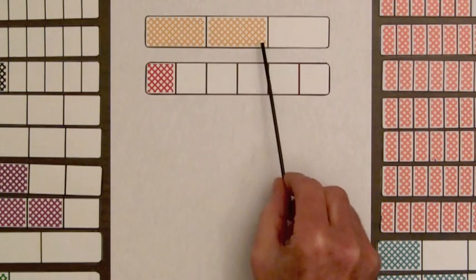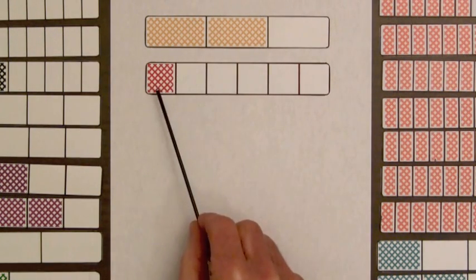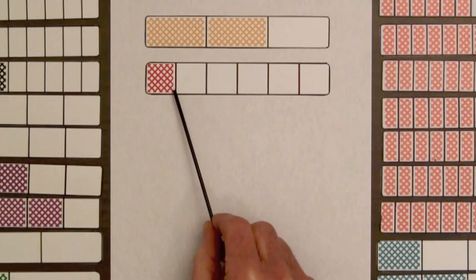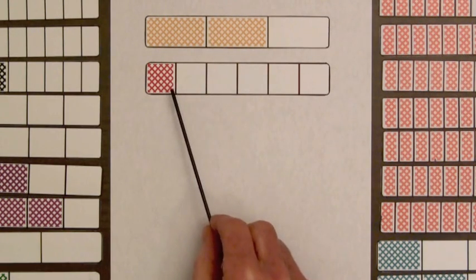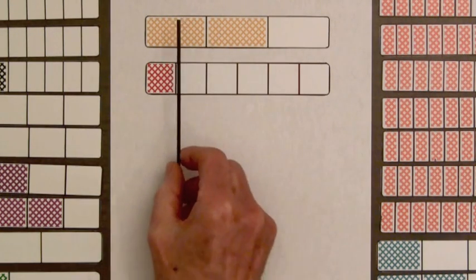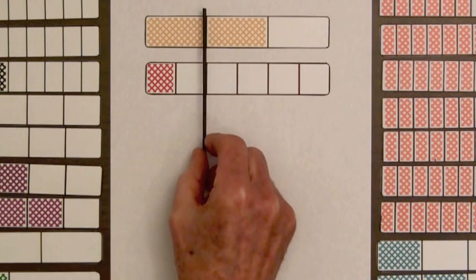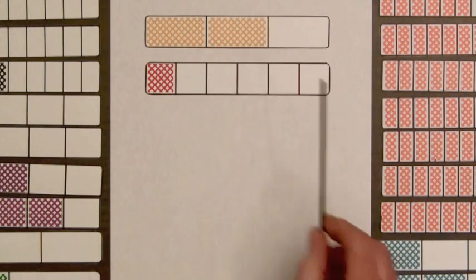Now we can see that the shaded amount of the top bar is four times greater than the shaded amount of the lower bar, or that the shaded amount of the lower bar fits into the shaded amount of the top bar one, two, three, four times.